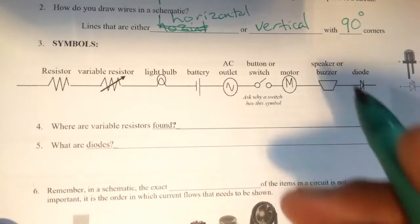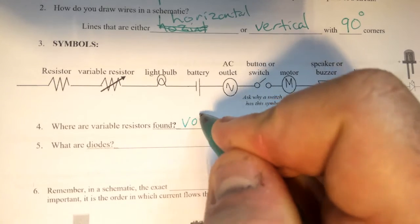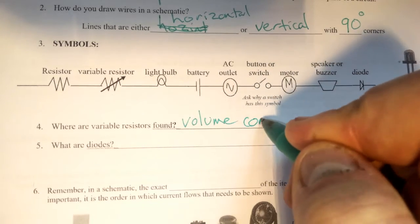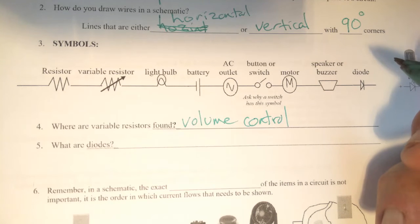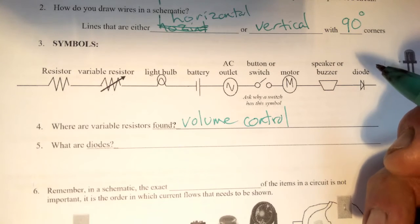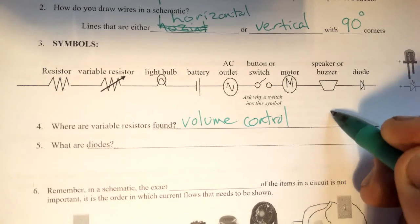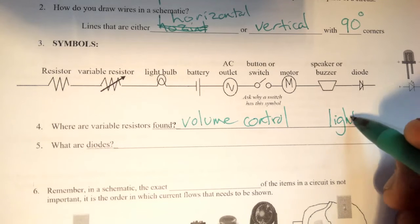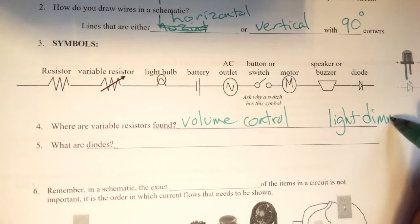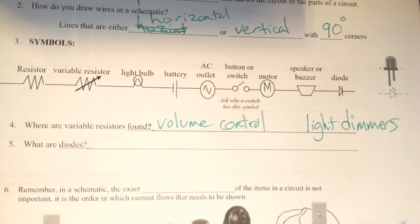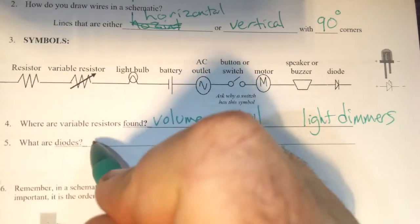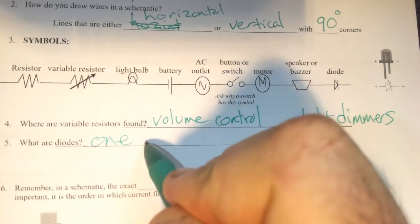Variable resistors are found in things like volume controls and light dimmers. If you want to have the volume really loud, you have very little resistance. If you want the volume soft, you turn it so it has lots of resistance. If you want to have the lights really bright, you adjust it so it has very little resistance. Diodes are one way streets for current.